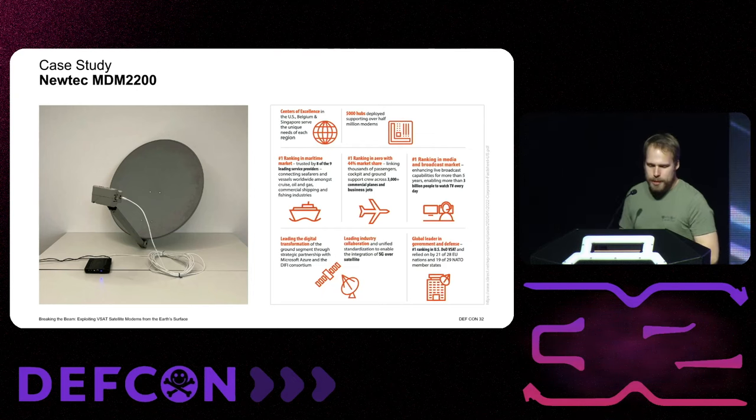In summary, we showed the reverse engineering of a broadly used VSAT system, identified numerous attack vectors and vulnerabilities, built a full end-to-end wireless attack using an SDR to compromise a working modem, and successfully performed a signal injection attack. We are as certain as feasible without direct satellite testing that this would work on a real satellite, ultimately breaking the beam.